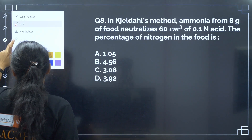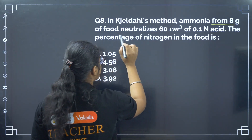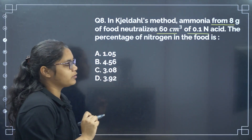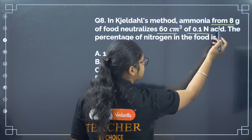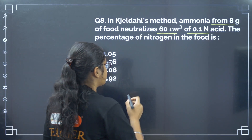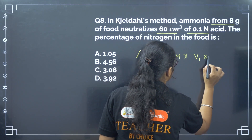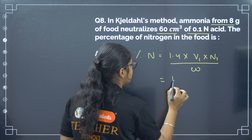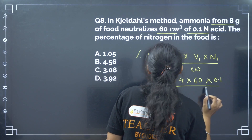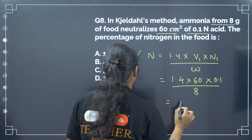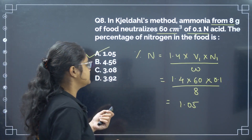Next important question: in Kjeldahl method, ammonia formed from 8 gram of food neutralizes 60 cm³ of 0.1 normal acid. The percentage of nitrogen formula is: 1.4 × V1 × N1 / W. Substituting: 1.4 × 60 × 0.1 / 8 gives approximately 1.05. Correct answer is option number A.